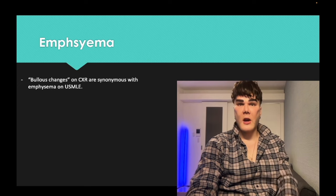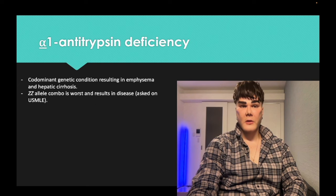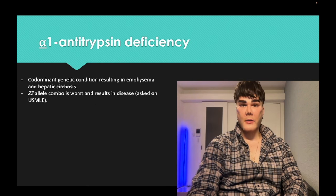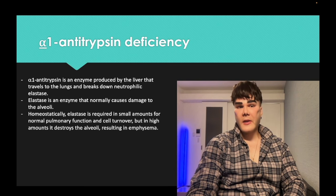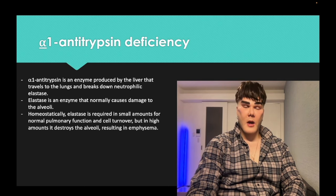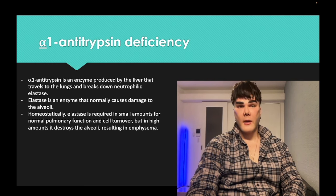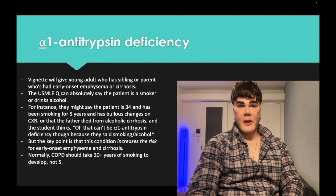Bullae changes mean emphysema on USMLE. In smokers it's called centriacinar emphysema, whereas alpha-1-antitrypsin deficiency is panacinar emphysema — the entire alveolus is destroyed. Alpha-1-antitrypsin is a codominant condition; the double Z allele is the worst. It's an enzyme produced in the liver that normally breaks down elastase, so deficiency leads to increased elastase and emphysema.